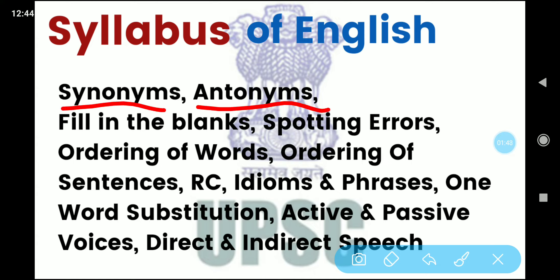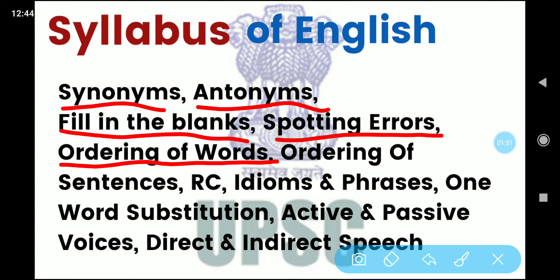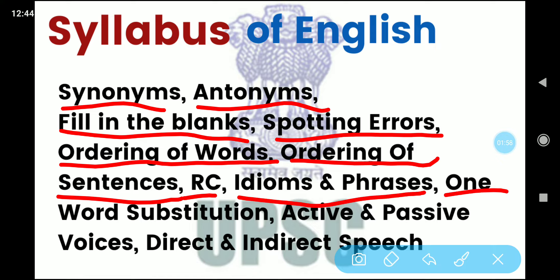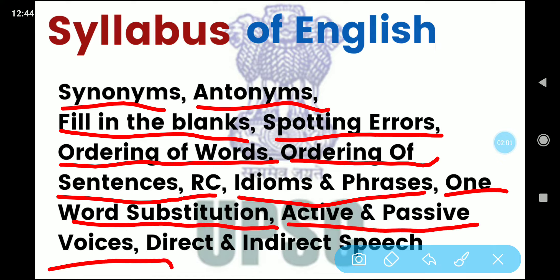In the English paper, the topics covered include: Synonyms, Antonyms, Fill in the blanks, Spotting errors, Ordering of words, Ordering of sentences, RC (Reading Comprehension), Idioms and phrases, One word substitution, Active and passive voices, and Direct and indirect speech.